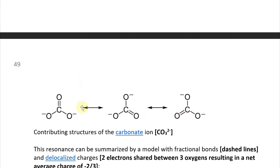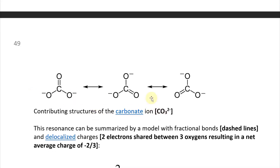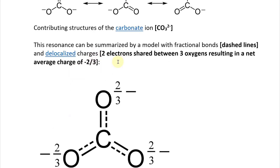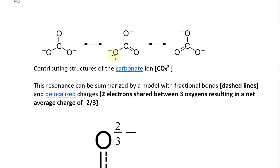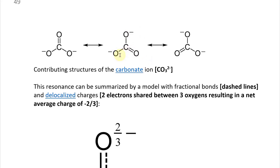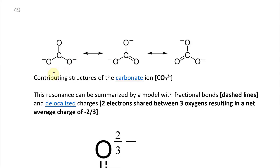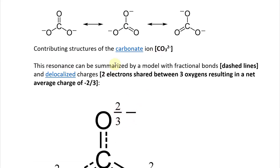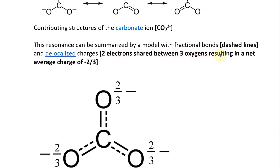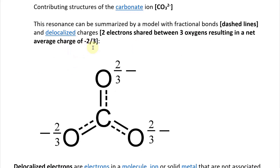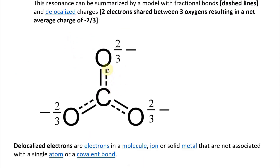These are all different contributing structures of the same ion but with different bond placements. This resonance can be summarized by a model with fractional bonds — dashed lines represent that they keep switching — and delocalized charges. The net average charge shared between three oxygens gives a two-thirds negative charge, and you can write this resonance structure with dashed lines representing alternating single and double bonds.